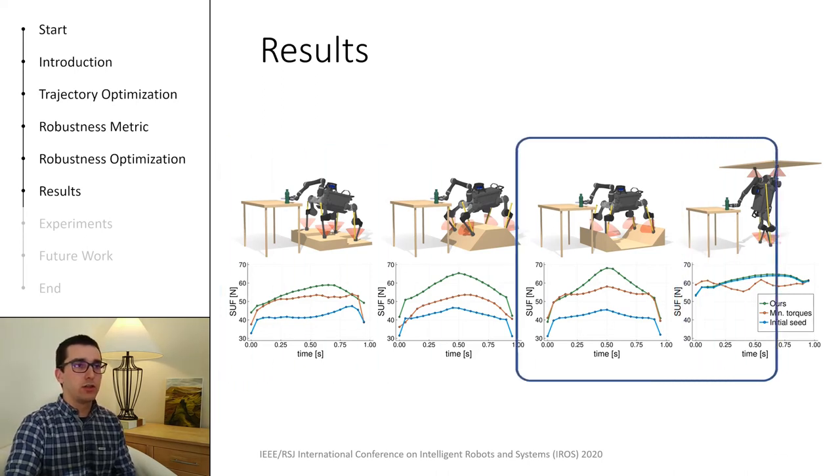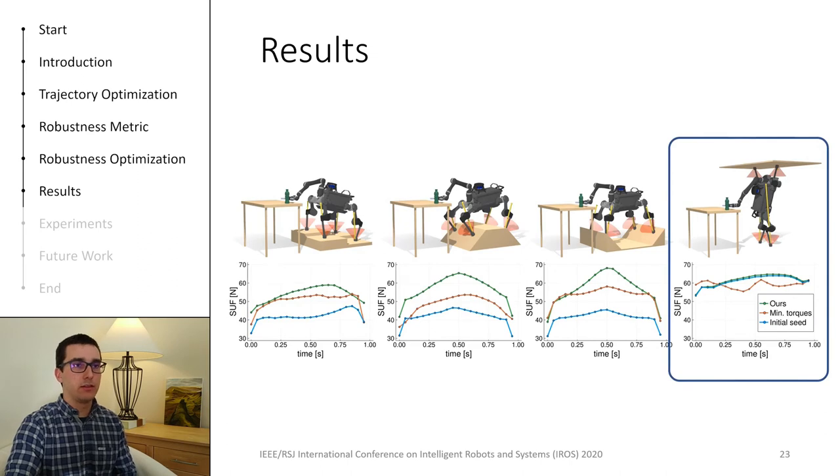Now, let's focus on the final scenario, the handstand. The robustness plot is significantly different from the other scenarios. We can see that our metric was able to improve the robustness of the trajectory, even if ever so slightly. In contrast, we can see that minimizing the torques actually decreases the overall robustness of the trajectory. So why did this happen?